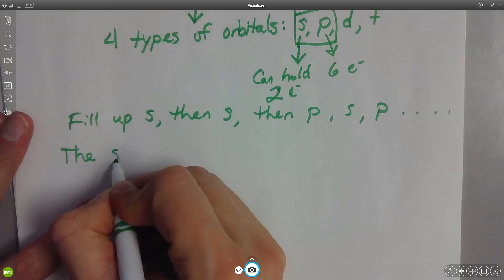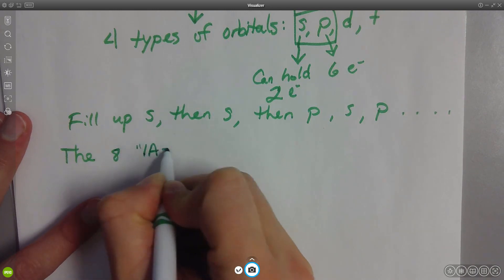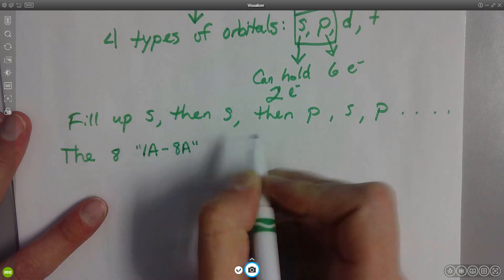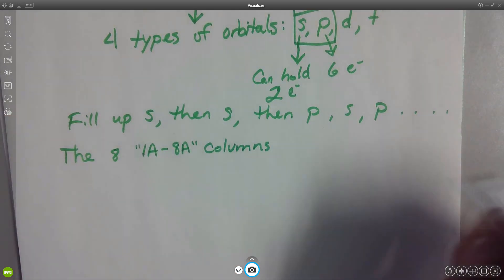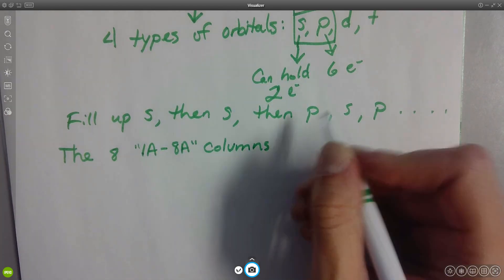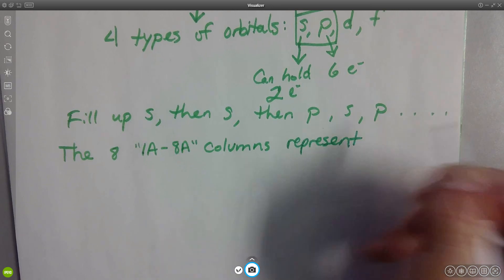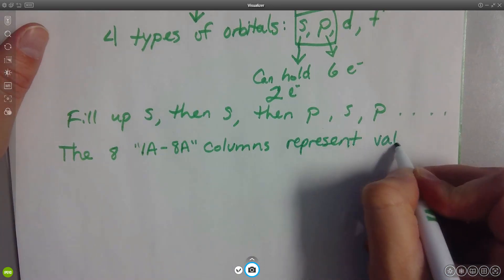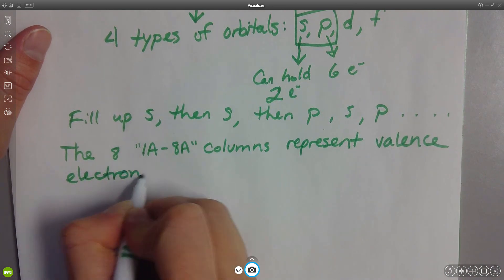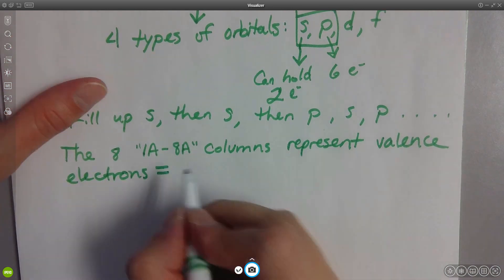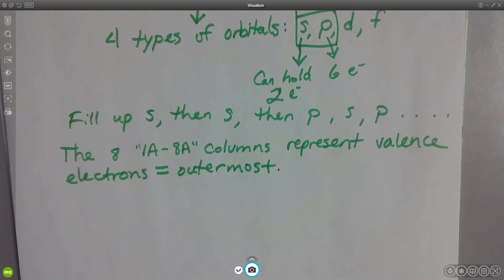The eight, 1A through 8A columns, represent what we call valence electrons. And that just means the outermost.